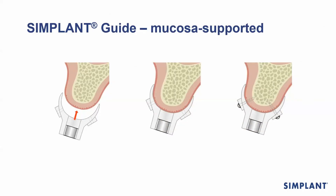Our next guide option would be a mucosa supported stent. With this stent it sits directly onto the mucosa, which is quite a spongy sort of surface, so we actually make it mandatory to use fixation screws. It's very easy to dislodge and move about, but this is a great solution if you want minimally invasive surgery.